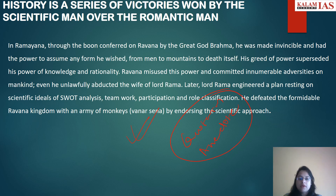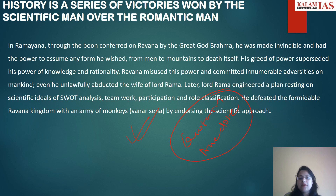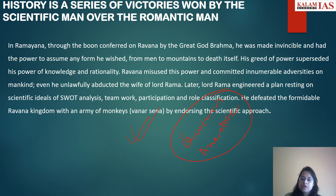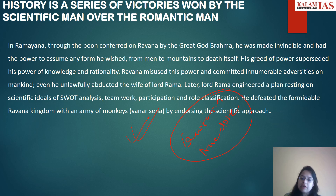But the greed of power superseded his knowledge and rationality, so he misused his power and committed innumerable adversities on mankind, even unlawfully abducting the wife of Lord Rama. But Lord Rama engineered a plan resting on the scientific ideals of SWOT analysis, teamwork, participation, and role classification — and defeated the formidable Ravana kingdom with an army of monkeys by endorsing the scientific approach.